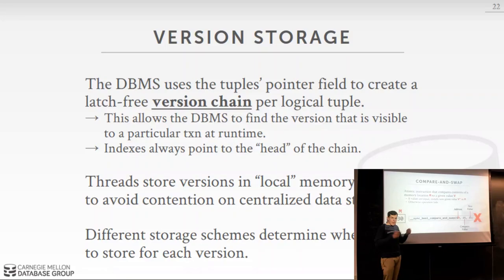In-memory systems store new versions in thread-local storage for each thread, so each thread has its own memory pool. When I create a new version, I don't store it in a global heap — I store it in memory local to my core, physically close to my CPU. If I have a multi-socket machine, it's not another socket's memory, it's my local memory. I do this to avoid contention on any centralized data structure. I'm the only thread writing to my local storage, so I don't need to acquire a latch to get a new free slot.